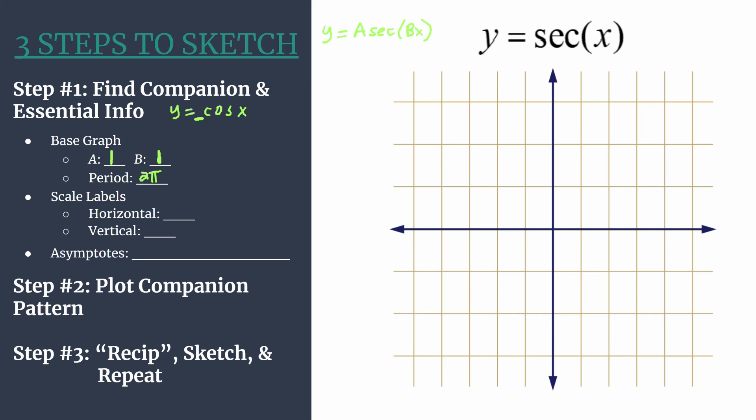So now that we have that we can go ahead and decide on some scale labels. So with this method we like to set our horizontal scale taking the period and dividing by four. So two pi divided by four is going to give us pi over two. So that's what we'll count by for our horizontal axis. And then for our vertical scale one should work well.